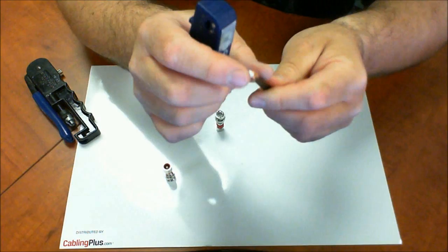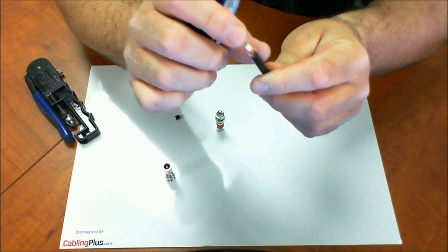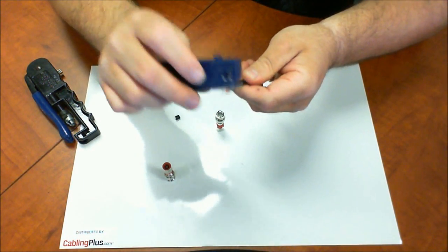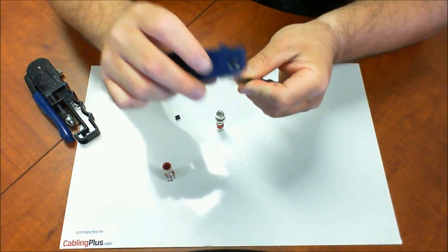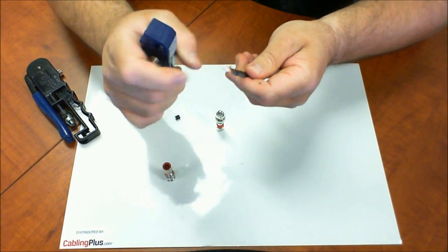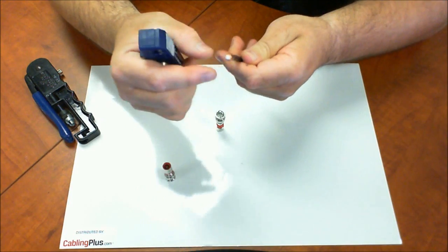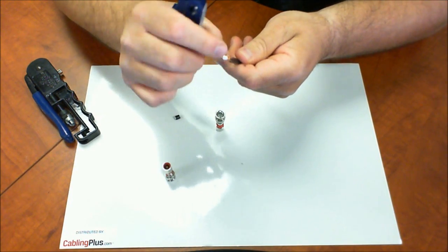Obviously, this is the center conductor, the copper center conductor right there. So, I'm just going to use my stripper and prepare this cable. Of course, you want to make sure that none of that braid is touching the center conductor or it will make the connector short or it will just fail.